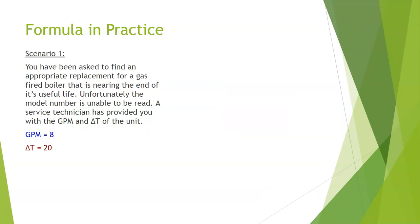Let's put our formula into practice. Scenario one: you have been asked to find an appropriate replacement for a gas-fired boiler nearing the end of its useful life. Unfortunately the model number is unable to be read. A service technician has provided you with the GPM and delta T of the unit. GPM equals 8, delta T equals 20. The first thing we need to do is use our equation: BTU equals GPM times delta T times 500. I can't stress enough, whenever you're using this calculation, write it down on your scratch paper. It's a very simple equation but it only takes one mistake to throw the whole thing off.